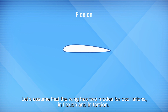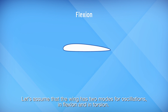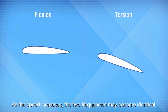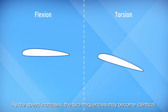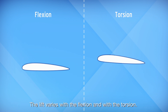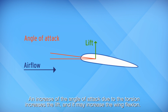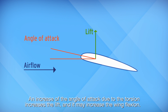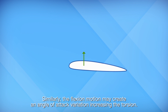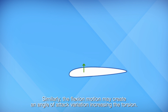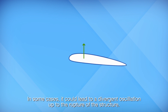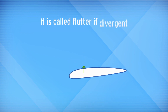Let's assume that the wing has two modes of oscillation: in flexion and in torsion. As the speed increases, the two frequencies may become identical. The lift varies with the flexion and with the torsion. An increase of the angle of attack due to the torsion increases the lift, and it may increase the wing flexion. Similarly, the flexion motion may create an angle of attack variation, increasing the torsion. In some cases, it could lead to a divergent oscillation, up to the rupture of the structure. It is called flutter.